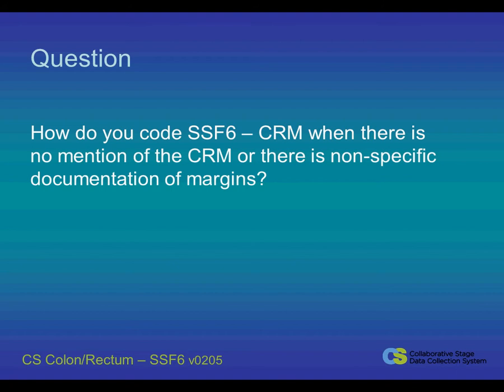There have been many questions regarding the circumferential resection margin, also known as the CRM, the radial margin, or the mesenteric margin, posted on the Cancer Forum. There is some confusion on how to code this data item when there is no mention of a CRM, or the pathology report gives only information on margins without specifying the CRM. We will look at a few scenarios regarding Site-Specific Factor 6 to help you understand how to code this field.